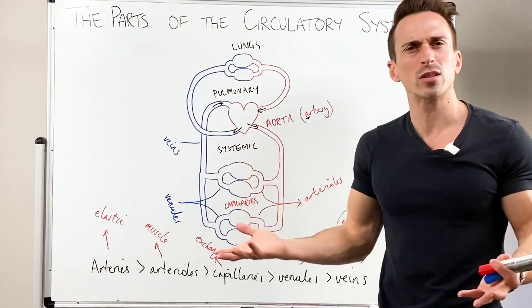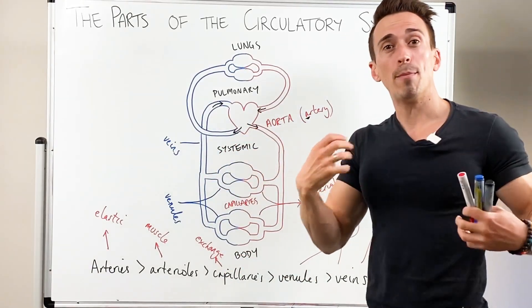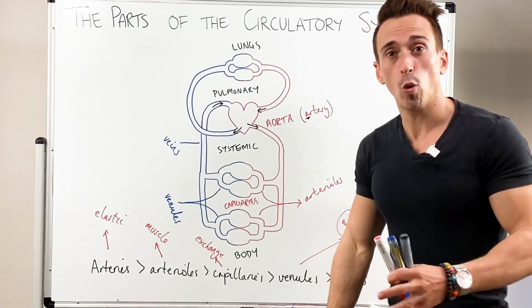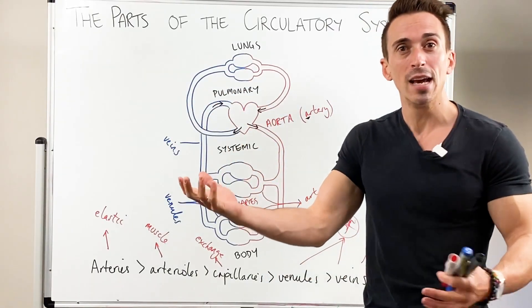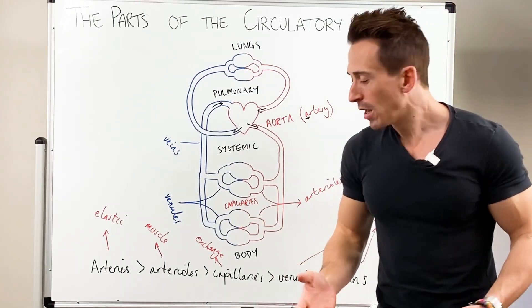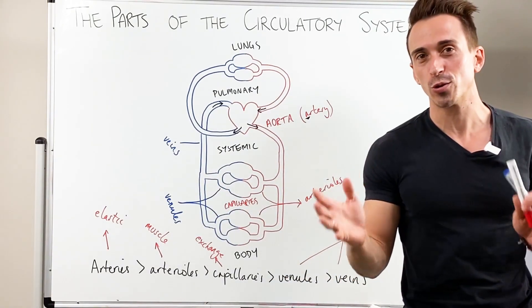Now, how does it move through if there's no pressure behind it? These veins get squeezed by our muscles, our skeletal muscles. So when I walk, the veins in my legs get squeezed and that pushes blood back up to the heart. Same happens for my upper body. So what we find here is a quick introduction to the parts of the circulatory system.